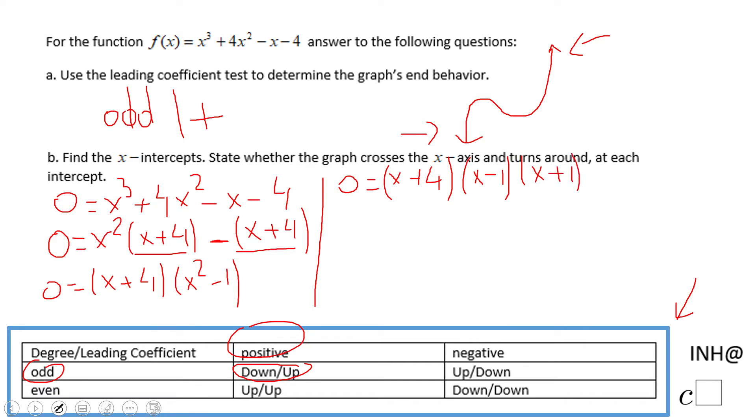Now we can use the zero product property because we have a multiplication of factors equal to 0. We're going to make the first factor (x + 4) = 0 and that will give us a zero of -4 and an intercept of (-4, 0).